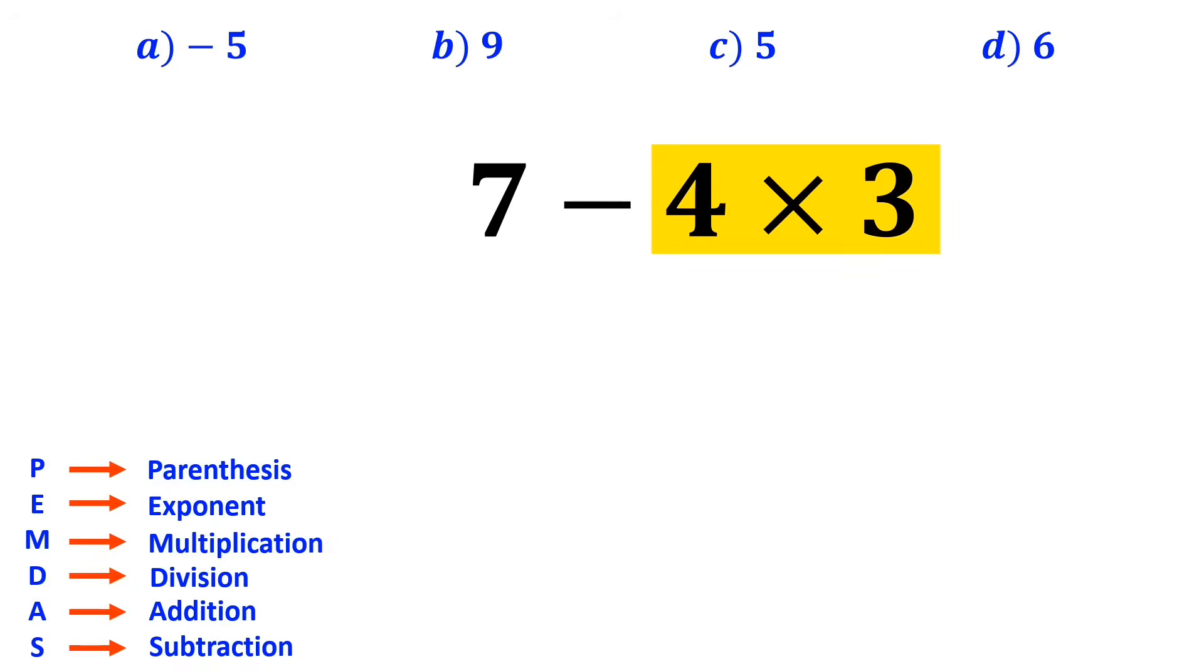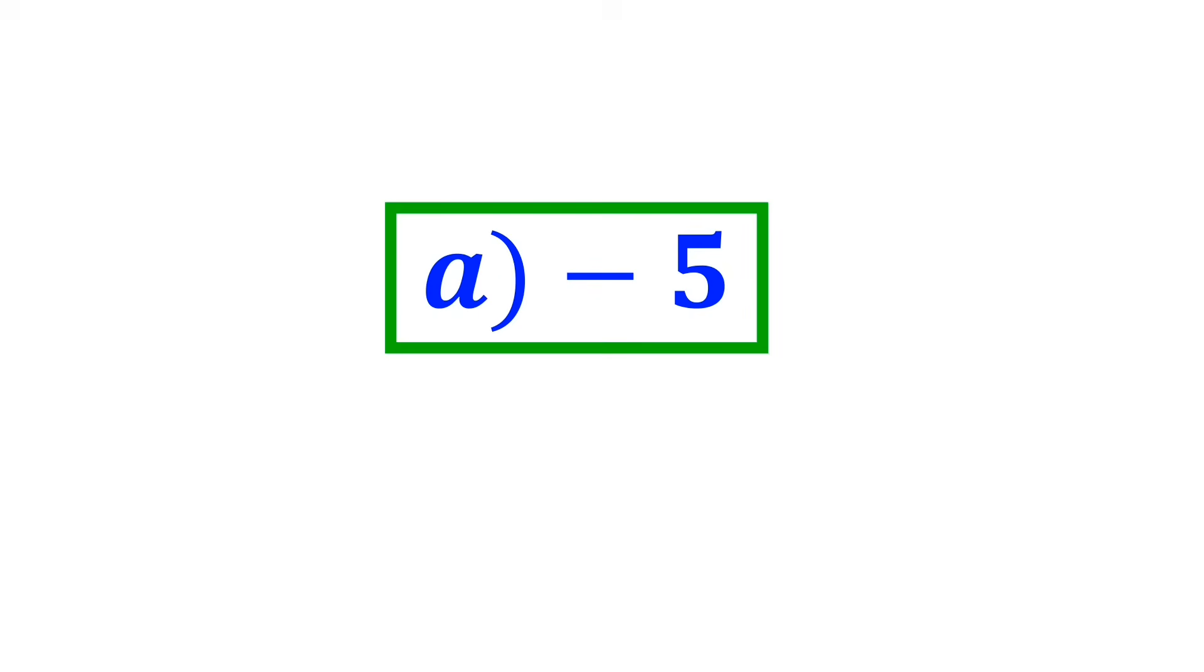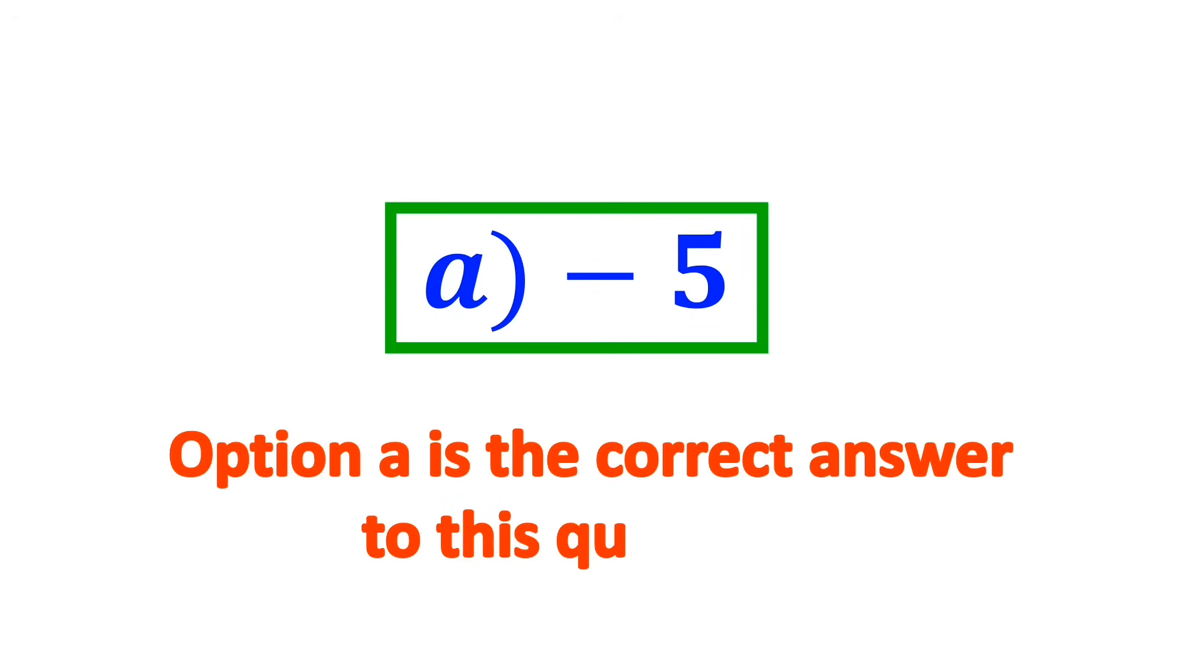In the next step, we go to multiplication because it has a higher priority than subtraction. So instead of this expression, we can write 7 - 12, which finally gives us the answer negative 5. Therefore, option A is the correct answer to this question.